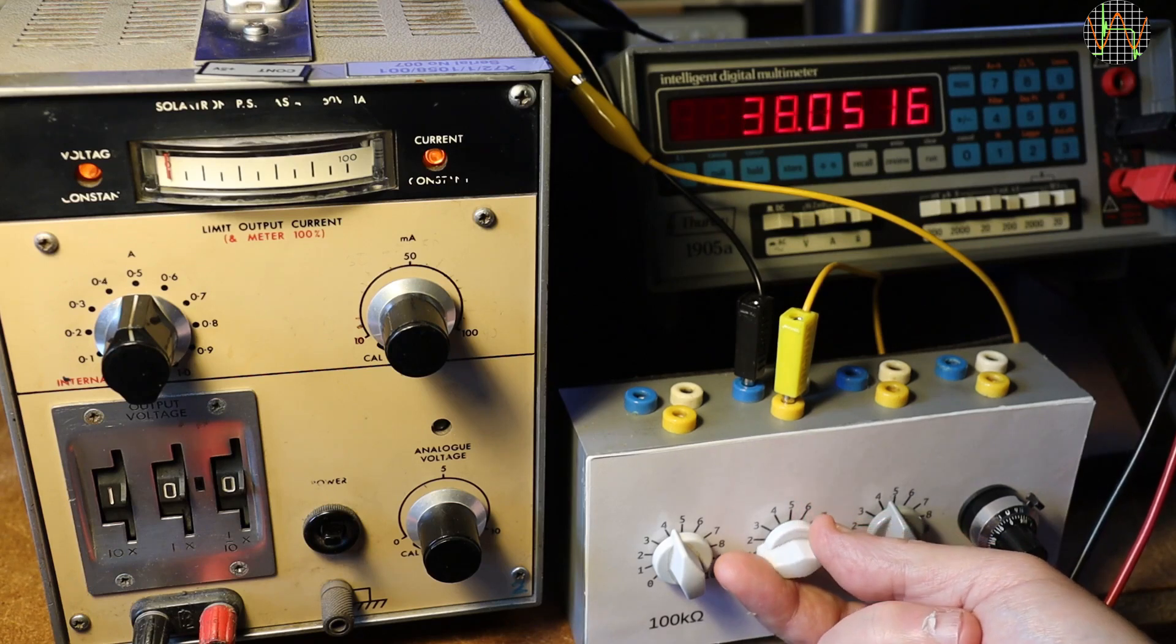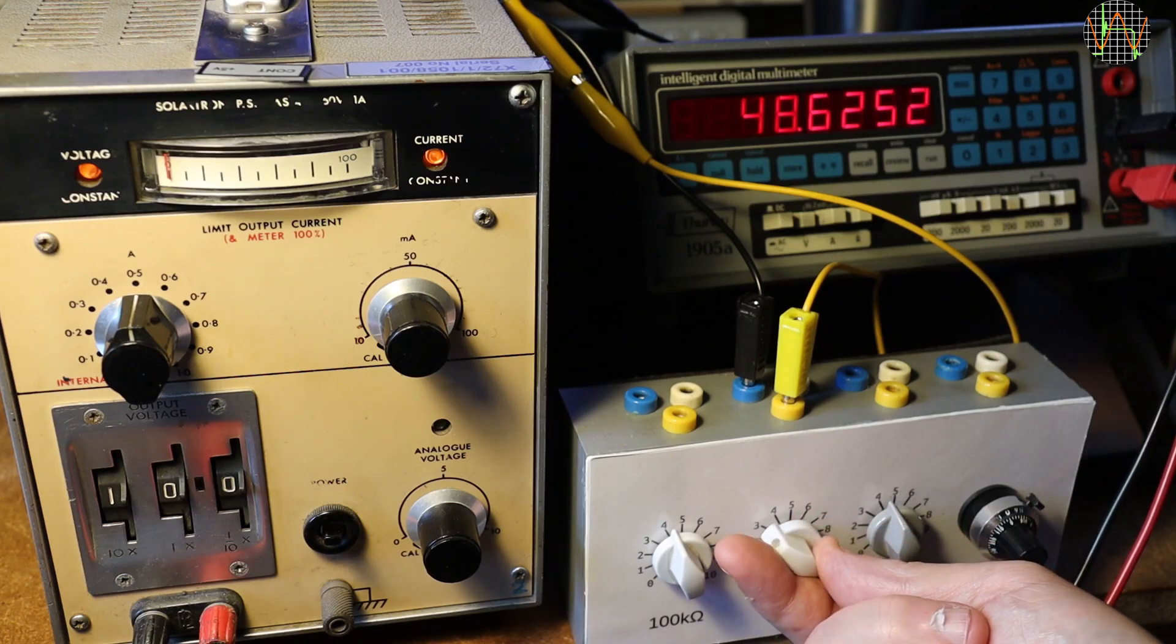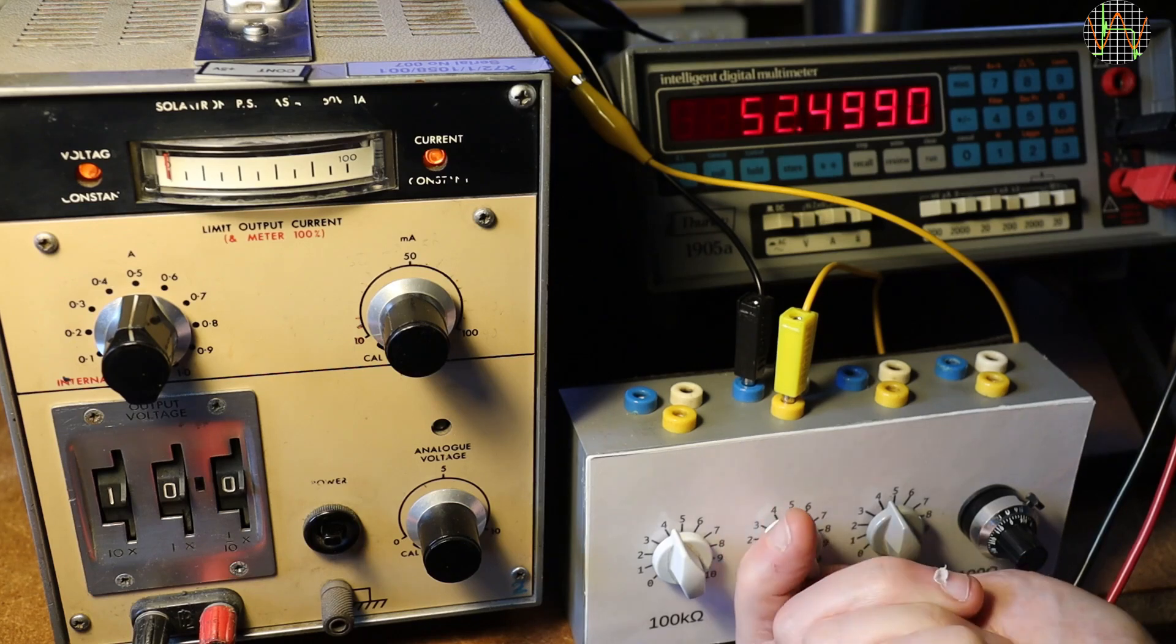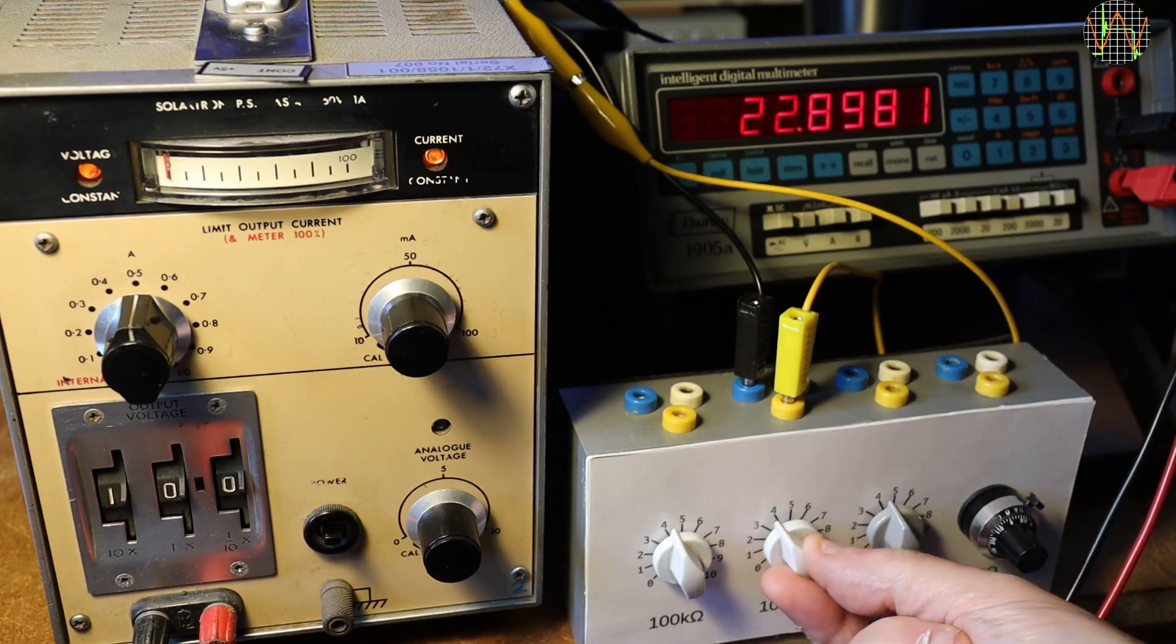In case you wonder, I did this test before fixing the relay which is why both lights are on but the supply is definitely in constant voltage mode.